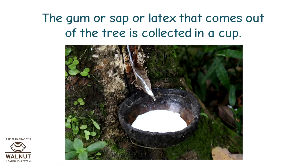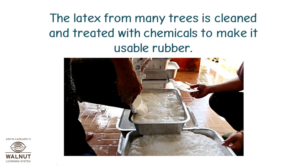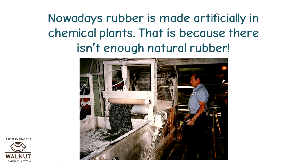The gum, sap, or latex that comes out of the tree is collected in a cup. The latex from many trees is cleaned and treated with chemicals to make it usable rubber.